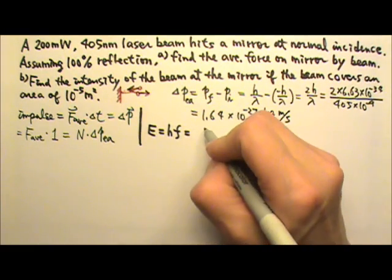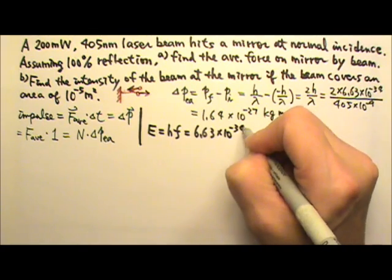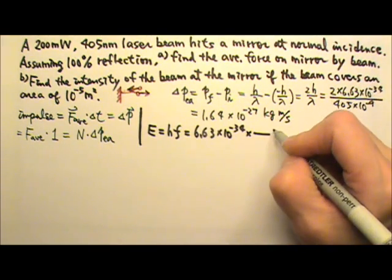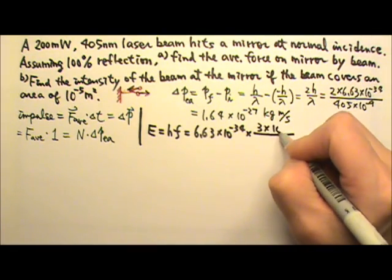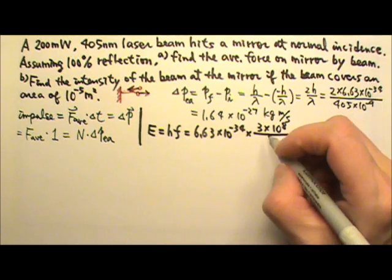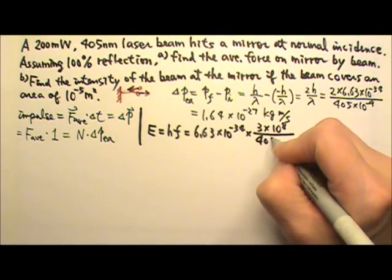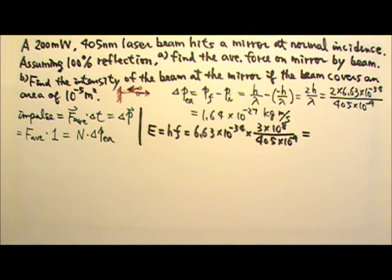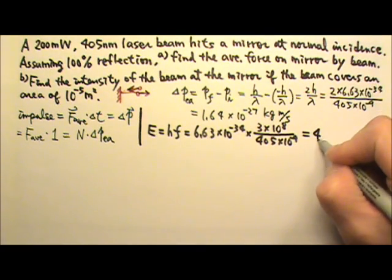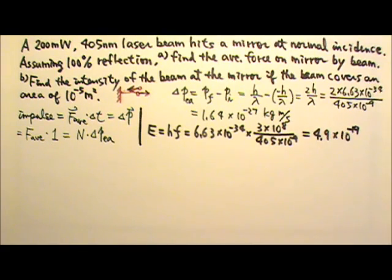So we can find the photon energy for each photon first. That's hf, which is 6.63 times 10 to the negative 34 times the frequency, which is c over lambda. c is speed of light in vacuum, 3 times 10 to the 8th, and the wavelength is 405 nanometers. This gives us photon energy 4.9 times 10 to the negative 19th joules.